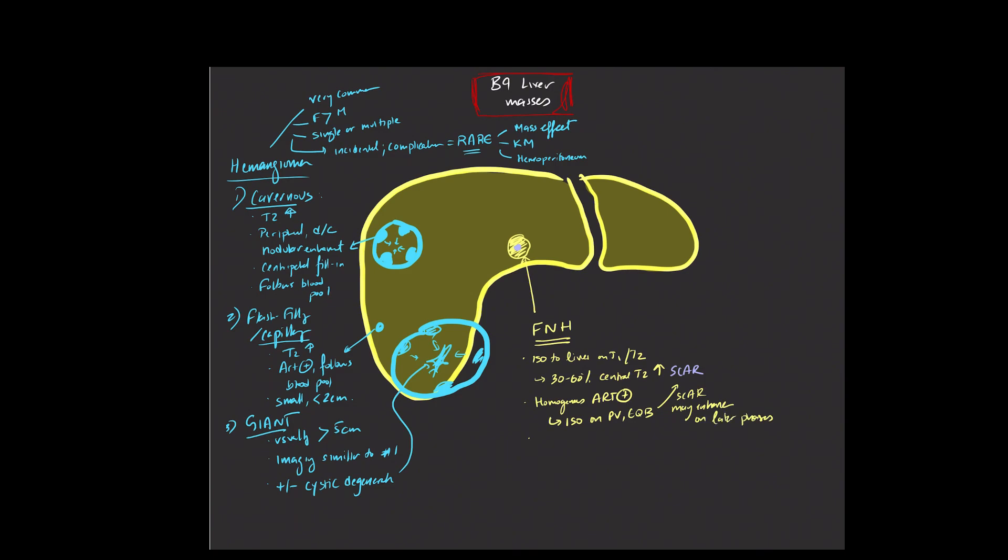We're often more confident in diagnosing these FNHs when we use agents with partial hepatobiliary excretion. When you give that contrast agent and wait 20 minutes, classic FNHs will be hyper-intense on this sequence. They can sometimes be iso-intense, but really classically hyper-intense, and it's due to the presence of certain organic ion peptide channels that allow contrast agent to come into the lesion but not be excreted outwards.